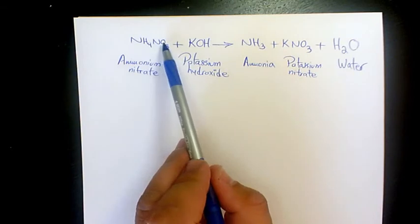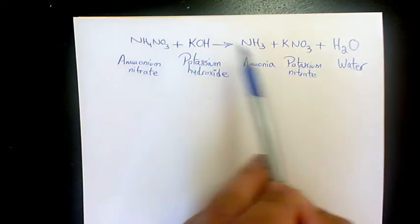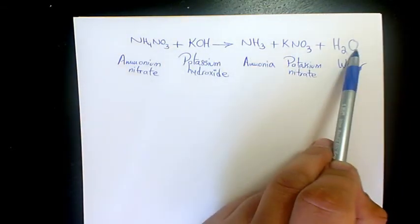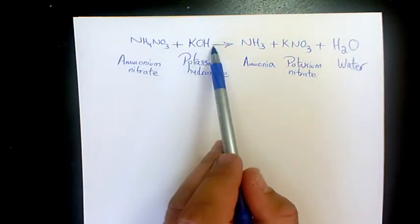For oxygen, we have three here and one here, that's four total. And here we have three and one, four as well, so oxygen is balanced as well.